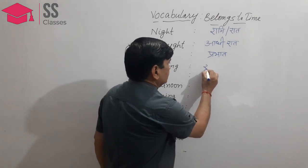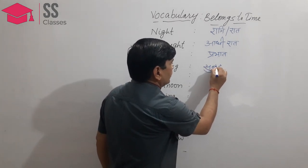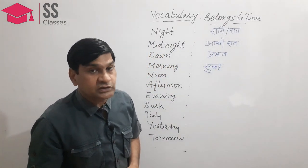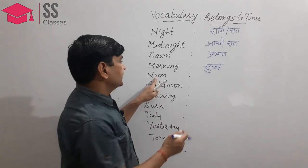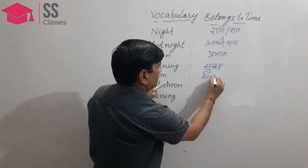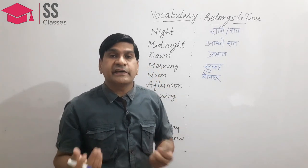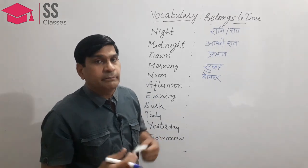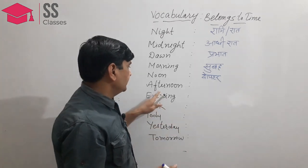Similarly, morning — prabhat ke baad ka samay hota hai. Morning starts after dawn and goes until twelve noon. Morning is the time before twelve noon. Noon — dho pahar. It is also called midday — madhya din — the exact middle of the day.